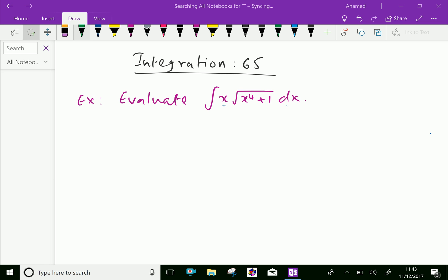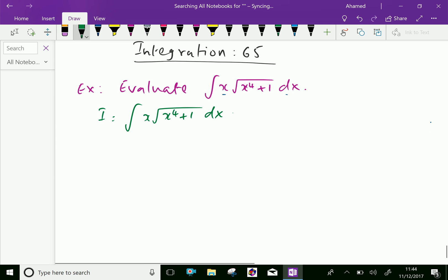Here, I equals the integral of x into square root of x to the power 4 plus 1, dx. Here, inside the square root, we have x to the power 4.